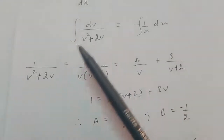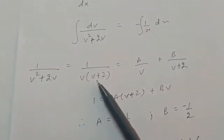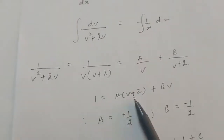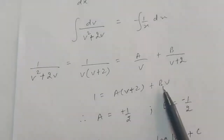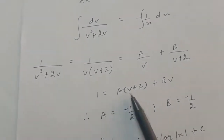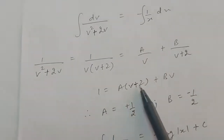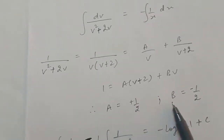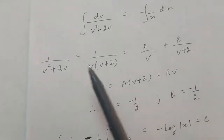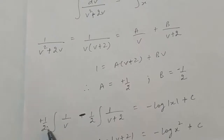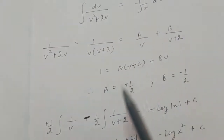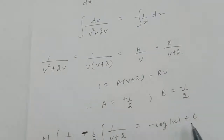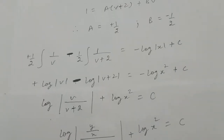For the left-hand side integral, write 1/(v(v+2)) using partial fractions as A/v plus B/(v+2). Taking LCM gives A(v+2) plus Bv equal to 1. Comparing coefficients: the coefficient of v gives A plus B equals 0, and comparing constants gives 2A equals 1, so A equals 1/2 and B equals minus 1/2. The integral becomes (1/2) integral of 1/v minus (1/2) integral of 1/(v+2), and the right side is integral of minus 1/x, giving minus log|x| plus c.